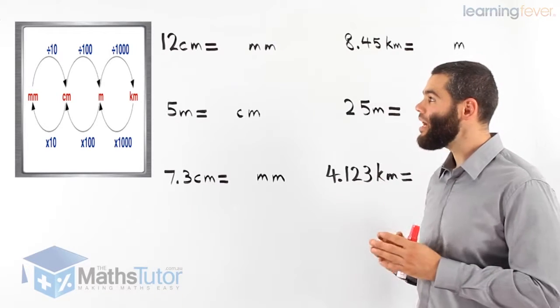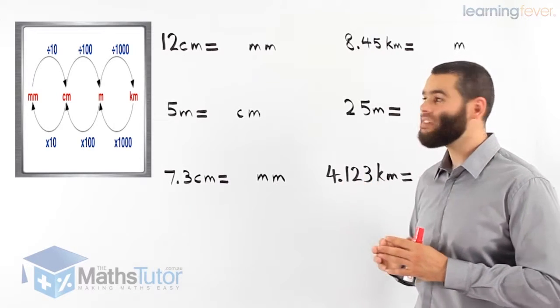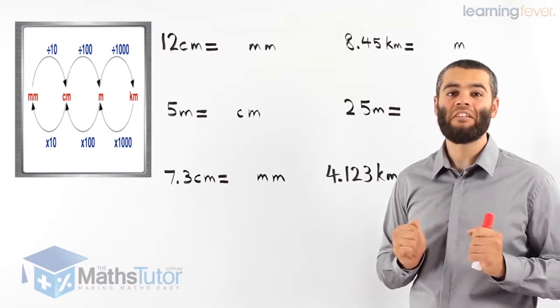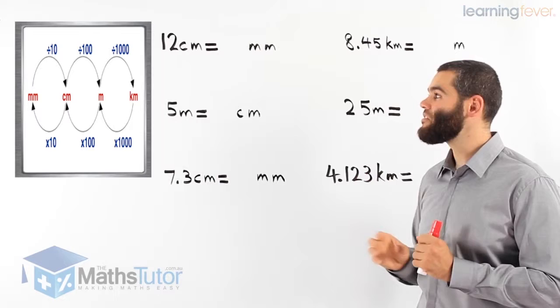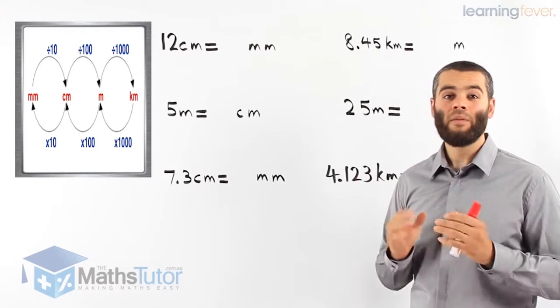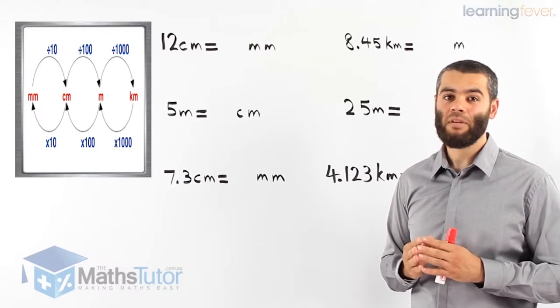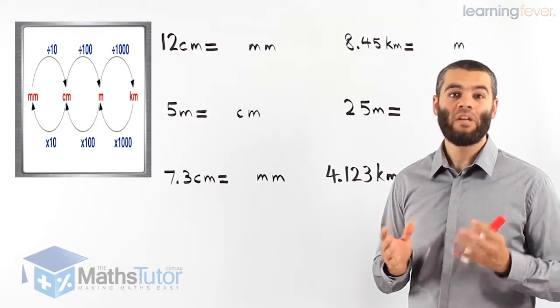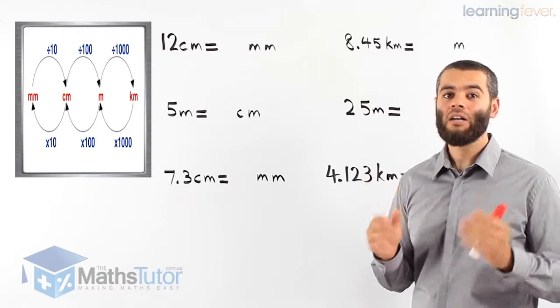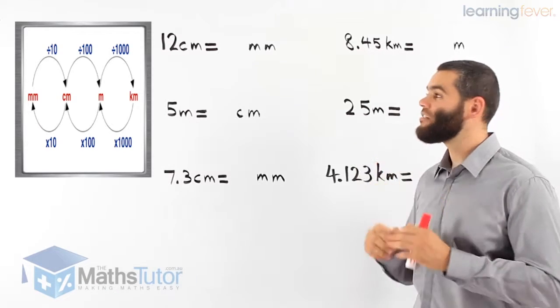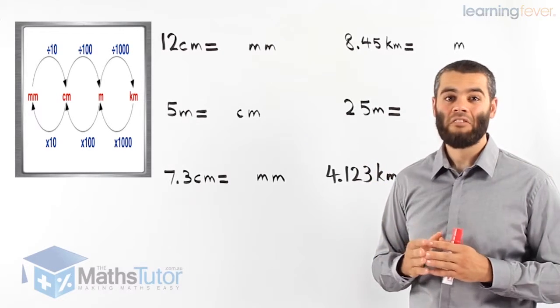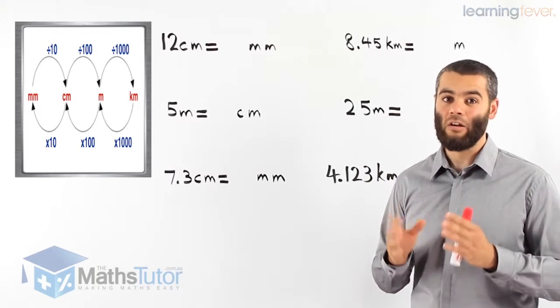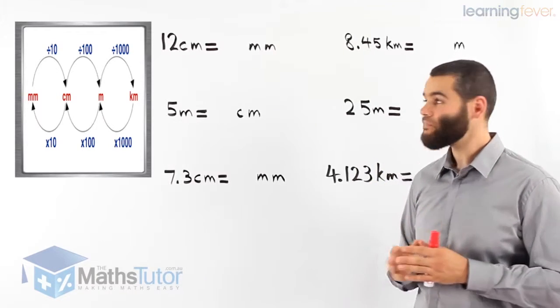Now you may ask, why is it 10, 100, or 1000? Because there are 10 millimetres in a centimetre, there are 100 centimetres in a metre, and there are 1000 metres in a kilometre.